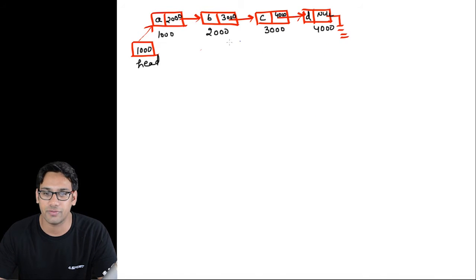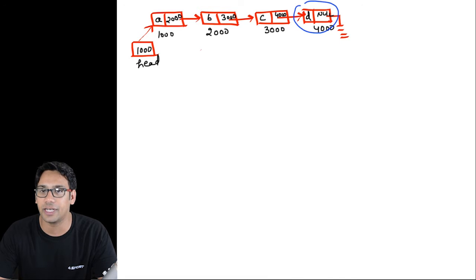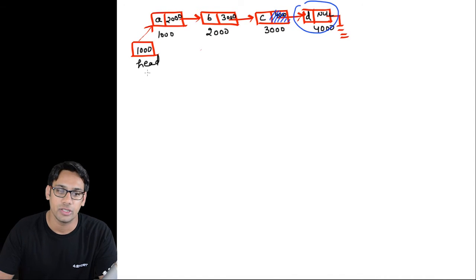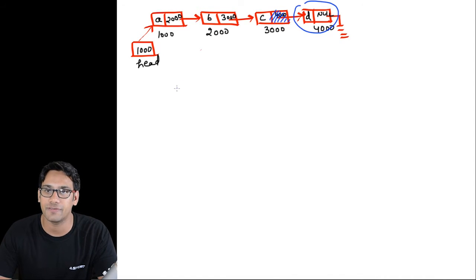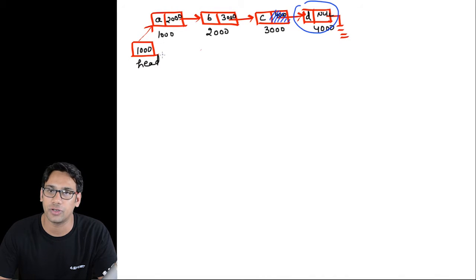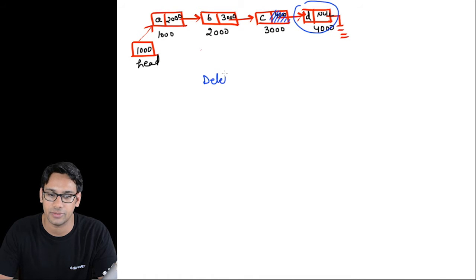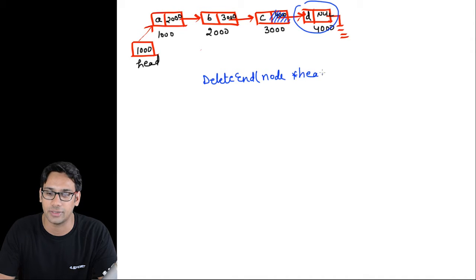Suppose we have this linked list and we want to delete the last node. If we delete this last node, we have to store null at that position — that is our goal. We are going to create a function called deleteEnd which takes the address of the front node of the linked list as node star head.